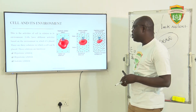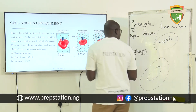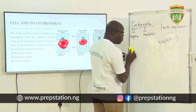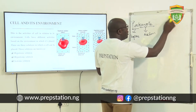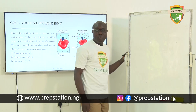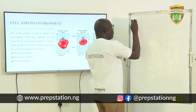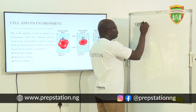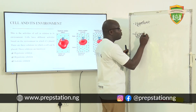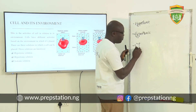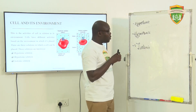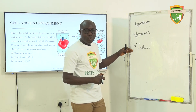Cells have different activities based on the environment in which they are placed. There are three different solutions in which a cell can be placed. The first solution is a hypotonic solution, the second is a hypertonic solution, and the third is an isotonic solution.